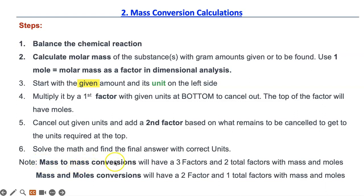This is what you need to remember. If you have mass to mass conversions, there will be three separate factors after you write the given amount and a total of two factors with mass and moles. But if you do a simpler mass and moles conversion, you will only have two factors and one factor with mass and moles.